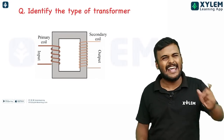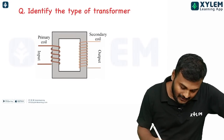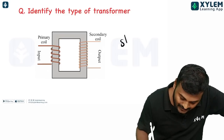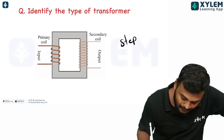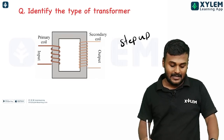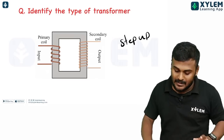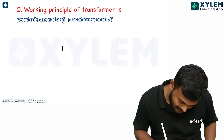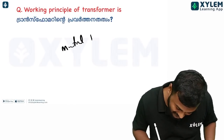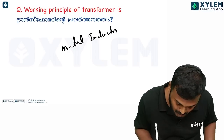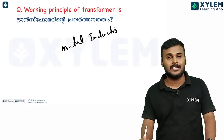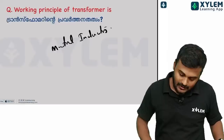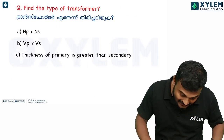Identify the type of transformer. We can see the primary coil and secondary coil. This is a step-up transformer. Transformers work on the principle of mutual induction — mutual induction is the same as a transformer.